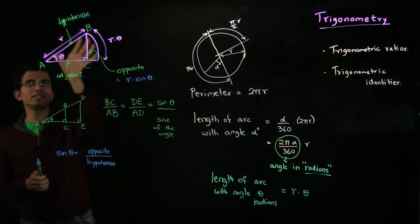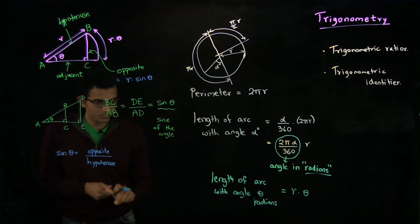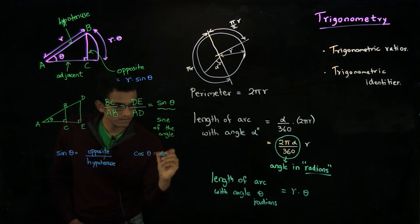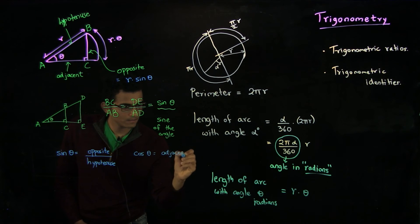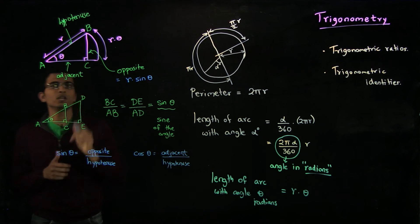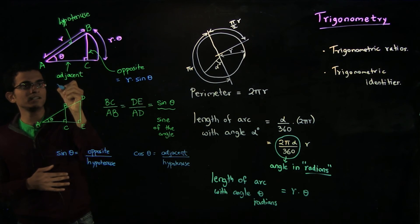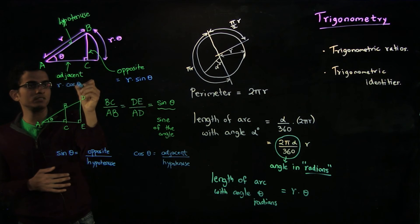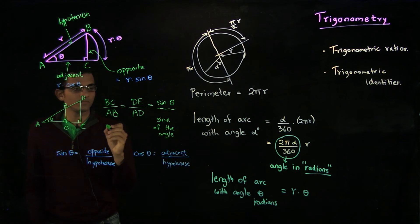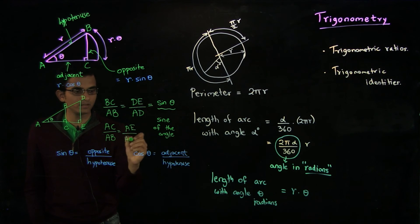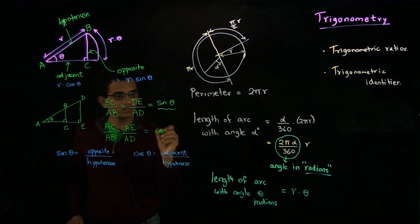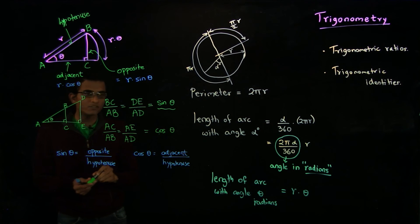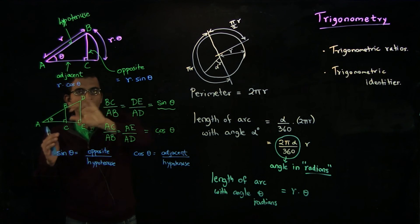Similarly, we can define the ratio of the adjacent upon the hypotenuse. That is defined as cos theta. Now the adjacent side, if the hypotenuse is of length R, this is of length R cos theta. In terms of this ratio, it will be AC divided by AB, which is also same as AE divided by AD. This is the cos of the angle. By similarity of triangles, this is just a property of the angle and does not depend on the sides of the triangle.